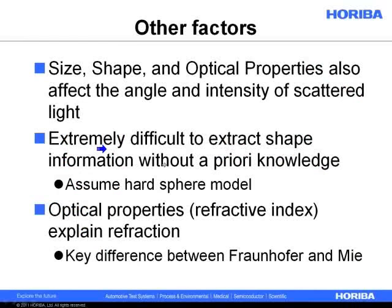Other factors that affect the light scattering pattern: in addition to size, shape and optical properties will affect the angle and intensity of scattered light. This is where we start needing to use the refractive index. In practice, it's extremely difficult to extract shape information without a priori knowledge. So what we do in order to get a solution is we assume that every particle is a hard, non-porous spherical particle. It simplifies the mathematics, we can solve it completely. It does add some error, but it's how we do the measurement.